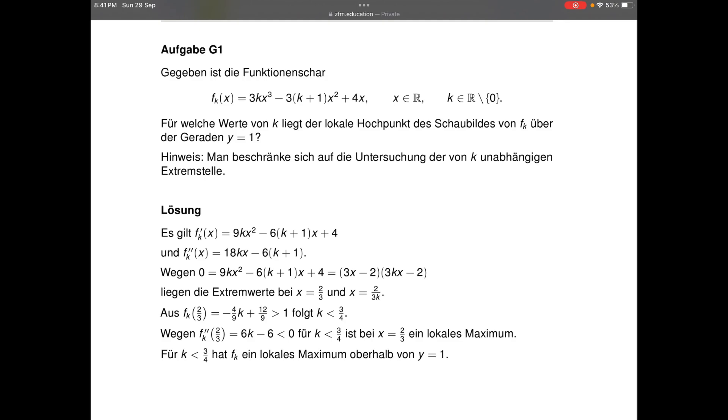So under this condition, of course, we can check for the double derivative which will definitely be less than zero for k < 3/4. So clearly x = 2/3 is one of the solutions where we'll get the local maxima for k < 3/4.